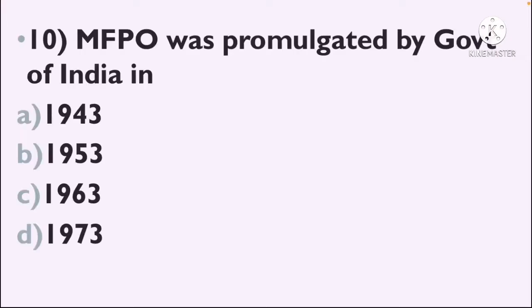Next question: MFPO was promulgated by the Government of India in — Option A: 1943, Option B: 1953, Option C: 1963, Option D: 1973. The correct answer is Option D, 1973.